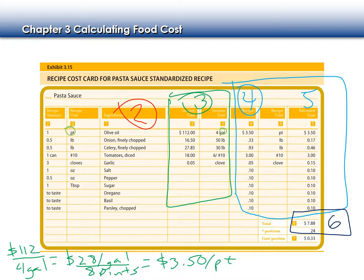You'll notice we have olive oil, onions, celery, tomatoes, and fresh garlic to cost out. For salt, pepper, sugar, oregano, basil, and parsley — the textbook just gives you 10 cents for each one. Most often if you actually cost out salt, you'll get less than a penny. If it's ever less than a penny, just charge a penny for it. Step six: add everything up — $7.88 to make this pasta sauce.